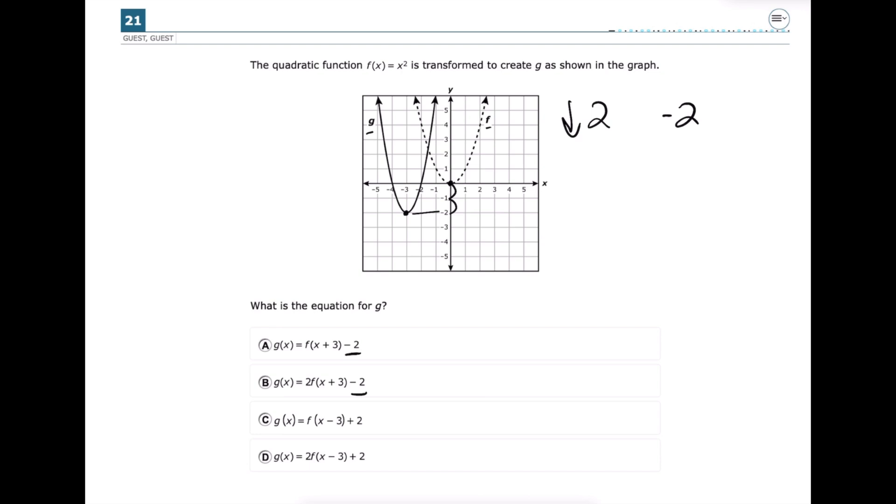c and d have plus 2. That is not correct. Plus 2 would mean that the graph actually went up. Next, we already saw that it also went to the left, right? So it went to the left 1, 2, 3.